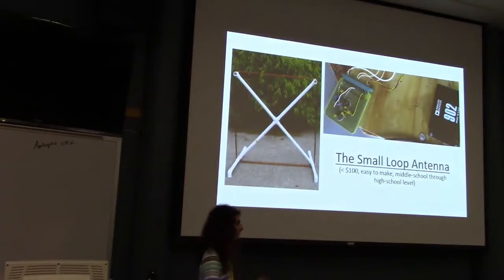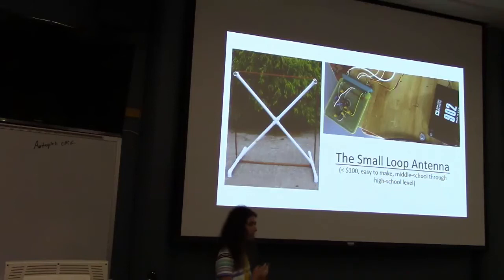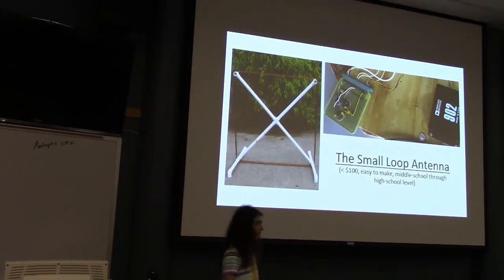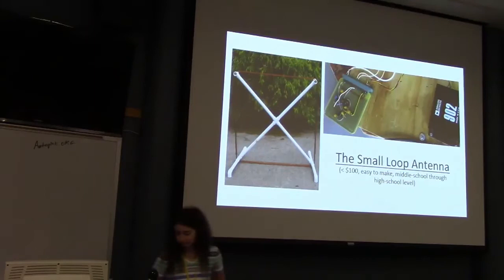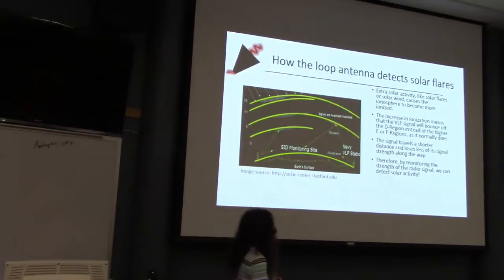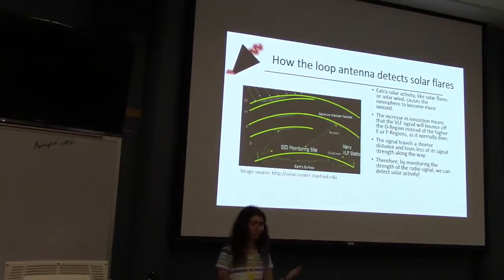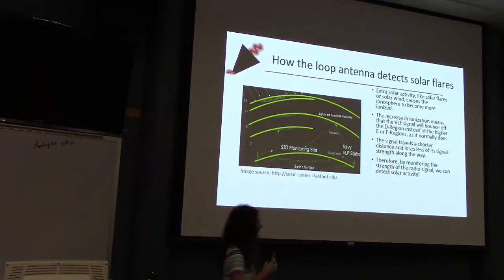The first project I'll talk about, primarily because it's one I've been most heavily involved with, is the small loop antenna. This idea is extremely simple to build, not very expensive — roughly under a hundred dollars. It could be used by anyone at the middle school or high school level, and could potentially be adapted to the elementary level as well. The main target audience is middle and high school.